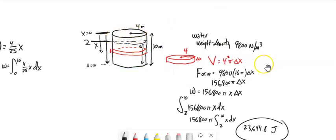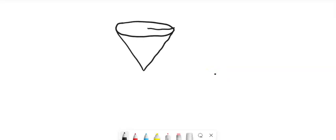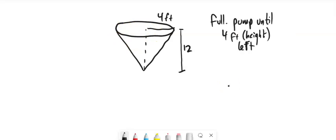That's a cylinder. We could have a more complicated shape like a cone. Say we have a conical tank with radius 4 feet and height 12 feet. It's full of water but we want to pump until there's 4 feet of height left. So we're pumping water over the edge until 4 feet remain. Set x=0 at the top.